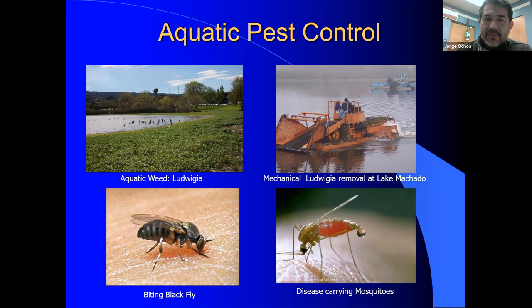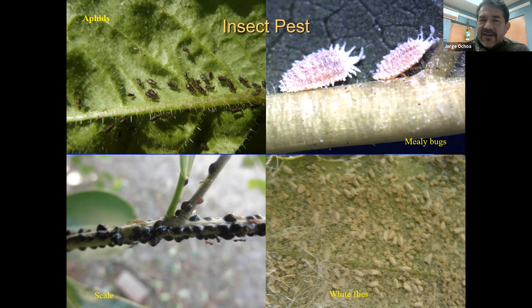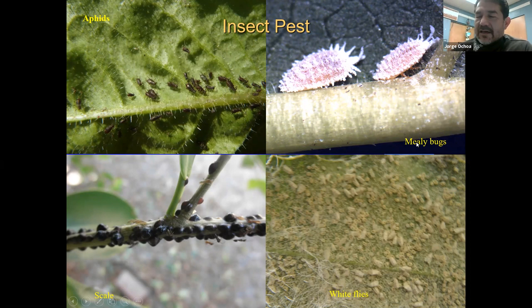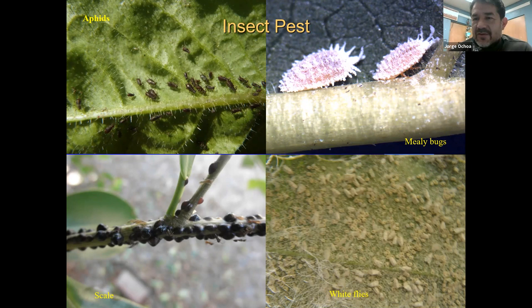Looking at insect pests that feed on plants: we have aphids, also known as plant lice, which feed on the sap of the plant — just like head lice feed on human blood. Then there are mealybugs, which also feed on plant sap. We also have scale and whitefly. These are four common insect pests that if you grow a plant in Southern California, at any point in that plant's life you will be dealing with some of these insects — they will find your plant and feed on it.